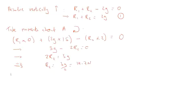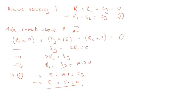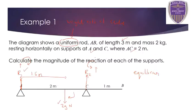Now I want to find R1 as well, so substitute into Equation 1: R1 plus 14.7 equals 2g. Take away the 14.7 and you get R1 equals 5.1 Newtons. The trick we used here - taking moments about a support point - we'll use quite frequently. If you take moments about a support point, you can ignore the reaction force there because it's zero meters away, so it always disappears.